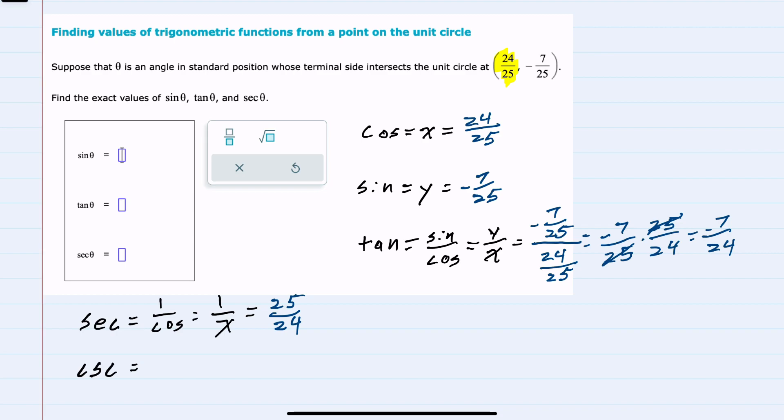Cosecant is similar, but it is 1 over the sine, so 1 over y is the reciprocal of y. The reciprocal of negative 7/25 is negative 25/7.